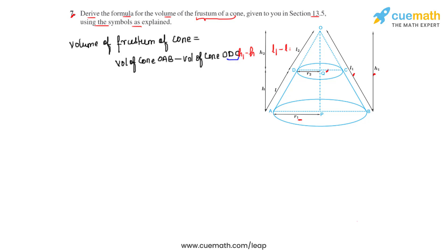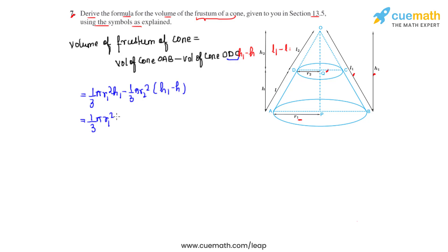Substituting the formulas, that gives us (1/3)πR1²H1 minus (1/3)πR2²(H1 minus H). We substitute the value of H1 = HR1/(R1 minus R2), giving (1/3)πR1² times HR1/(R1 minus R2) minus (1/3)πR2² times HR1/(R1 minus R2) minus H.